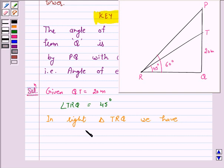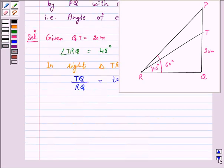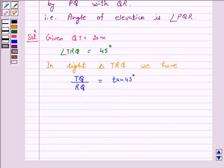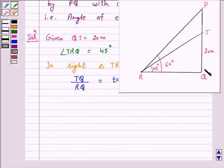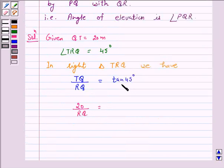Therefore, TQ upon RQ is equal to tan 45 degrees. So we have, TQ is given to us 20 meters. Here 20 over RQ is equal to tan 45 degrees and this is 1. So this implies RQ is also equal to 20 meters.